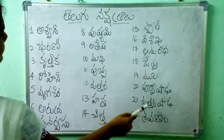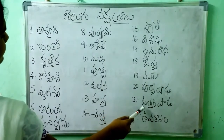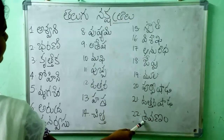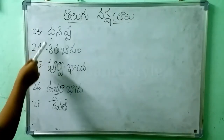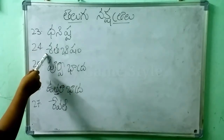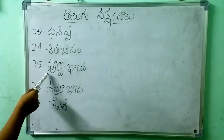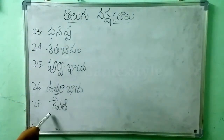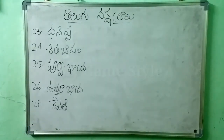Purvashada, Uttarashada, Shravana, Dhanishta, Shatabisham, Purvabhadra, Uttarabhadra, Revati. So this is Telugu 27 Nakshatralu. Thank you for watching this video.